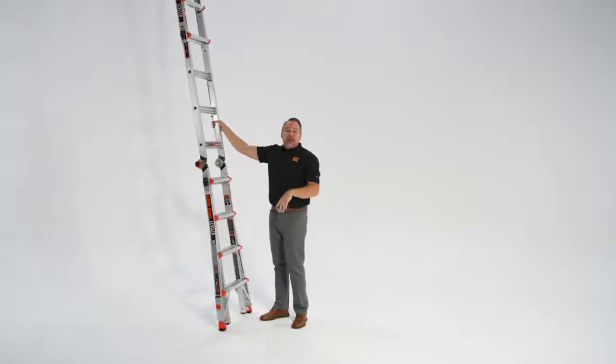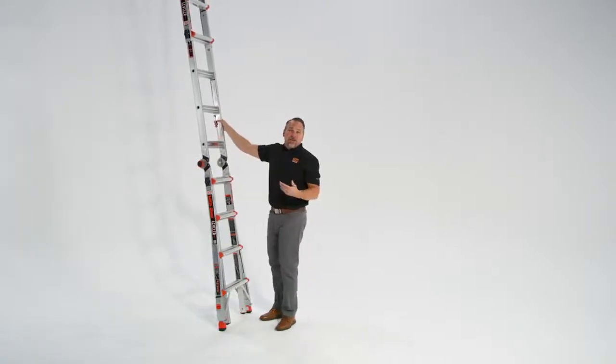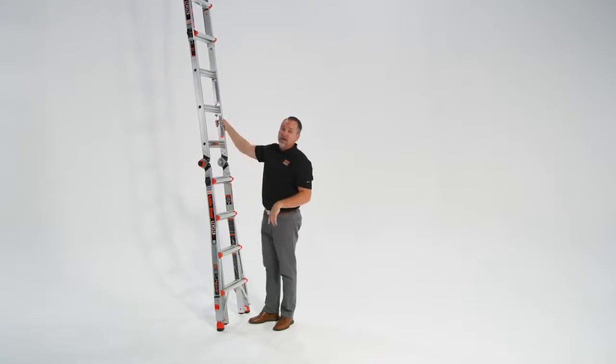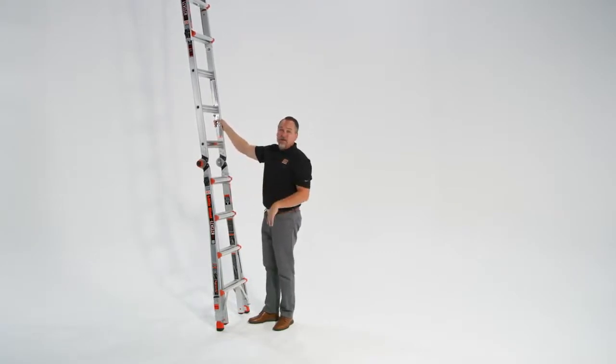Leaning at a 75-degree angle or what we refer to as a 4-to-1 ratio. That just means that for every four feet the ladder's going up, it should be one foot away at the bottom. It'll be at a 75-degree angle.